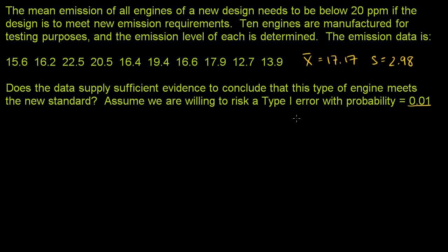Before we do that, let's define our null hypothesis and alternative hypothesis. Our null hypothesis is that we don't meet the standards — that the mean of our new engines is exactly 20 parts per million. This is essentially the best possible value, or the lowest value, where we still don't meet the standard.